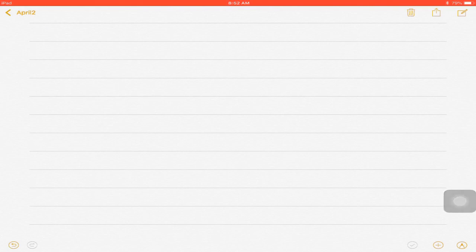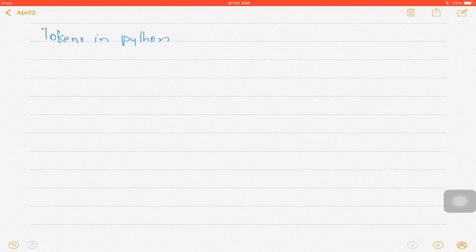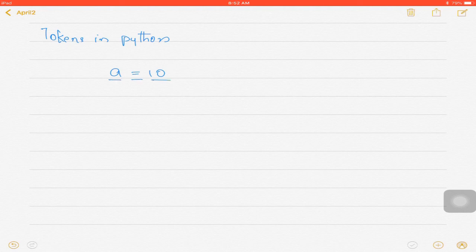Hello everyone, today we are going to talk about tokens in Python. In its simplest form, tokens are nothing but the smallest individual unit of a programming language. So suppose if I declare something of this sort: a is equal to 10.